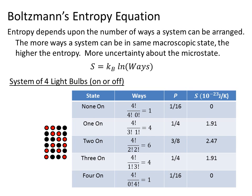Looking at the rest of them, 2 on has the most possible states and we can count them by putting all the possible combinations where there are just 2 on. There are six of those. So that gives a probability of 3 eighths, so the highest probability, and also the highest entropy of 2.47 times 10 to the minus 23 joules per kelvin.